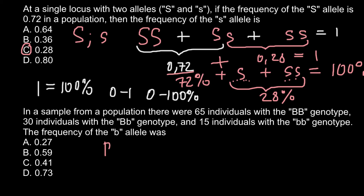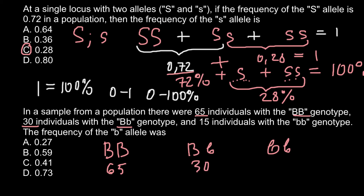So let's list all the genotypes. The first genotype would be homozygous dominant, then we have heterozygous genotype, and then we have homozygous recessive genotype. There are 65 individuals in the homozygous dominant group, 30 individuals in the heterozygous group, and 15 individuals in the homozygous recessive group.